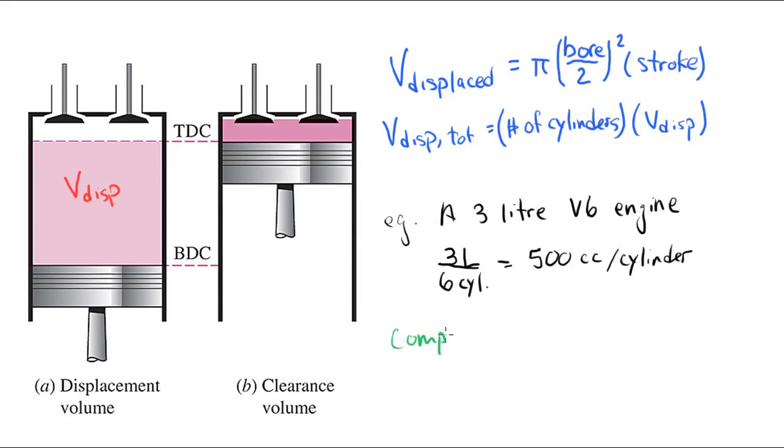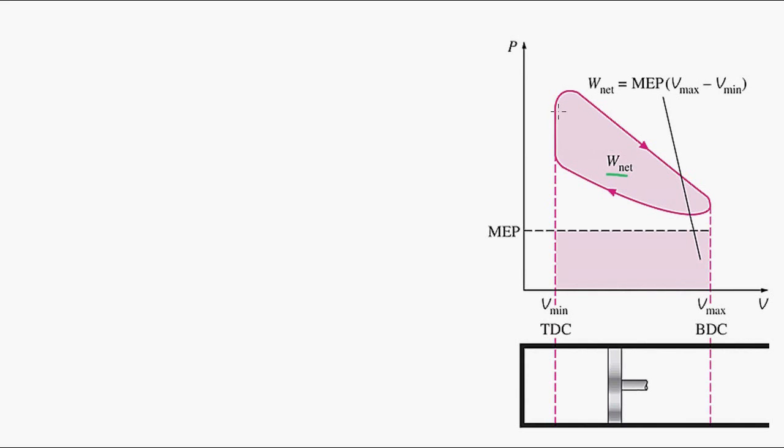Now the important parameter is called the compression ratio of the engine. That's a ratio of the two volumes, so the minimum volume and the maximum volume. This is important because it determines the performance of the engine.